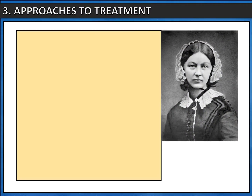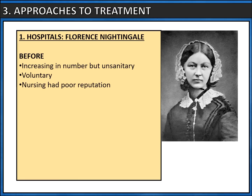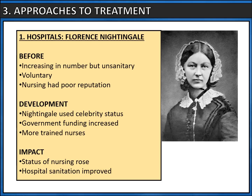Let's look at some key individuals and their approaches to treatment, and firstly Florence Nightingale's work with hospitals. Before her work, hospitals were increasing in number across Britain but they were unsanitary, often very low quality, and nursing had a poor reputation. Florence Nightingale was a celebrity nurse thanks to her work in the Crimea, which brought her to national importance. When she returned to Britain she carried on her work — the government used her as an advisor and she wrote manuals on the training of nurses. Her impact went right through to the end of the period: the status and quality of nursing rose, and the quality of sanitation in hospitals improved too.